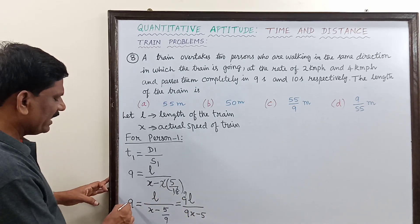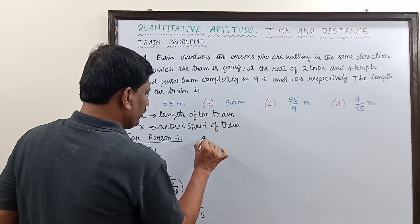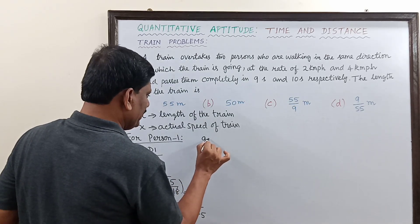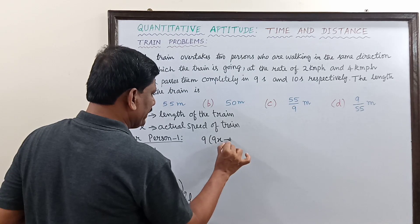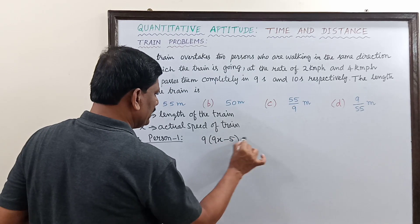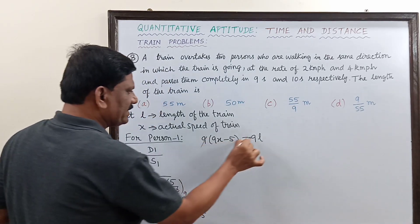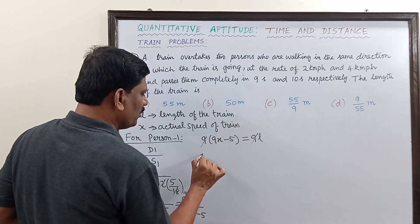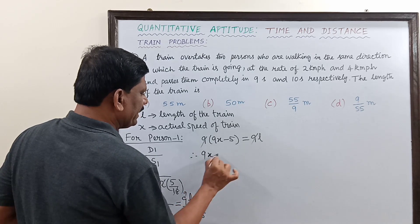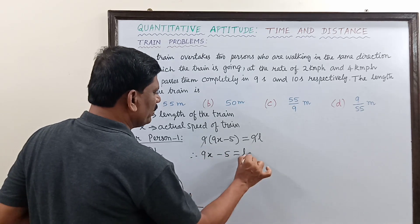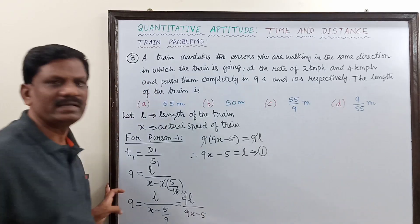So 9 × (9x minus 5) equals 9L. Cancelling 9 on both sides gives us 9x minus 5 equals L. This is Equation 1.